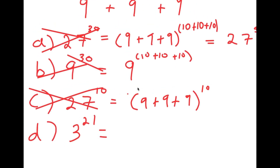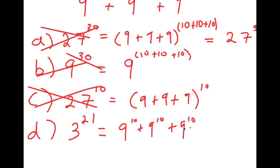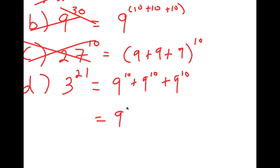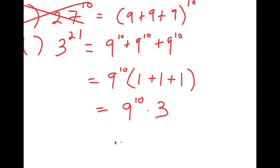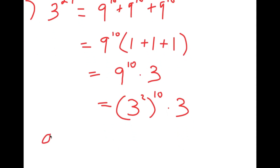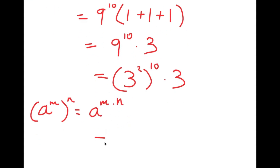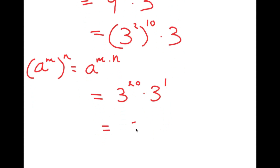3 to the power of 21, which is by process of elimination the right answer — let's see how we get this. We start with 9^10 + 9^10 + 9^10, and factor out 9 to the power of 10. So we get 9^10 times (1 plus 1 plus 1), which equals 9^10 times 3. Now this is equal to (3 squared) to the power of 10, times 3. Using the rule that a^m to the power of n equals a^(m·n), we get 3^20 times 3^1, and adding exponents gives us 3 to the power of 21.